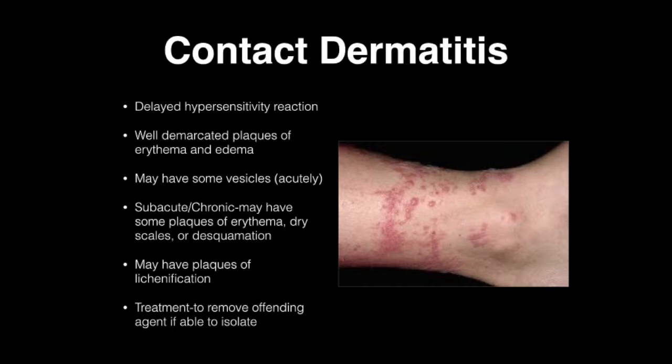Subacute to chronic cases may have some plaques and erythema and dry scales, or some areas of decalmation where you'll actually lose the top layer of skin and it will sort of slough off. Chronically, you may have some plaques of lichenification.